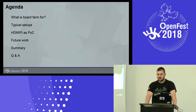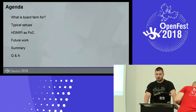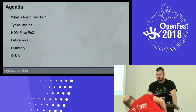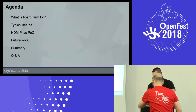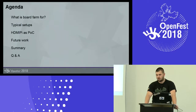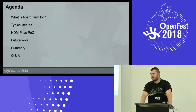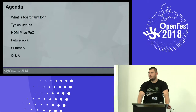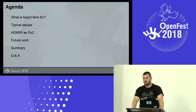Let's start. First of all, the schedule. In the beginning, I will tell a few words about what people are using the board farm for, and what are the typical setups available in the open source community. Then I will go to the HDMI Pi, which is my proof of concept of how to grab audio and video on a board farm and how to use it for testing your audio and video subsystem. I will also tell a few words about future work, since this solution is only a proof of concept — it requires some future work, and maybe some of you will be interested in picking up the idea.